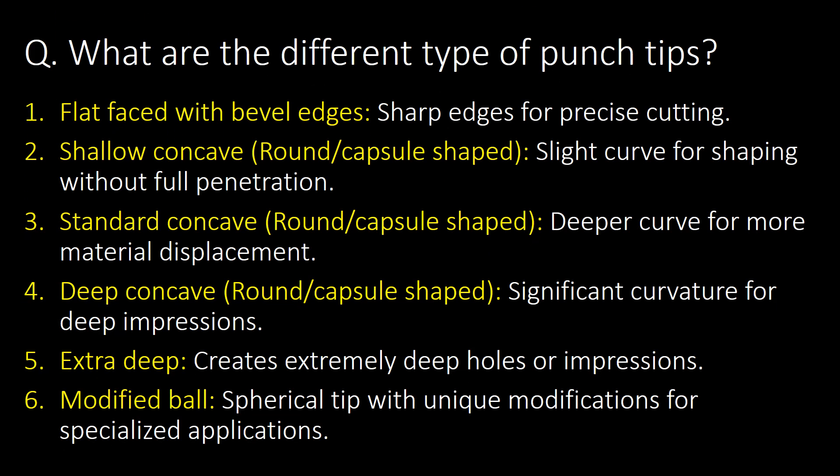What are the different types of punch tips? Here are the 6 different types of punch tips commonly used in the pharmaceutical industry: first, flat faced with bevel edges; second, shallow concave; third, standard concave; fourth, deep concave; fifth, extra deep; and sixth, modified ball.